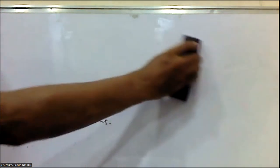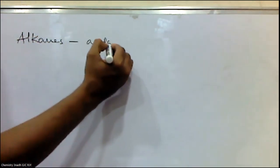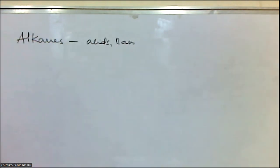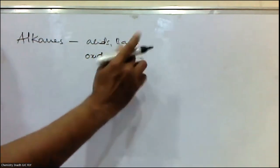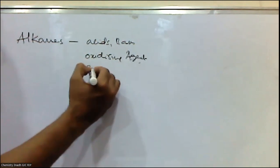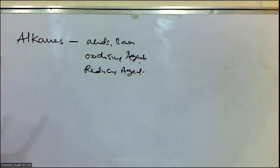Alkanes are the saturated hydrocarbons having molecular formula CnH2n+2. Alkanes are inert towards acids, bases, oxidizing agents, and reducing agents — they are chemically not at all reactive. That is why they are called paraffins. But under special conditions, alkanes participate in reactions.